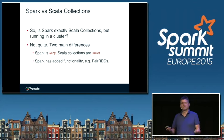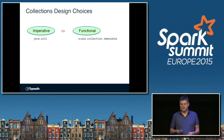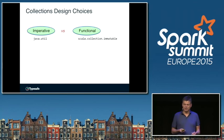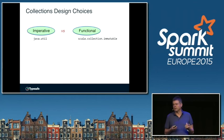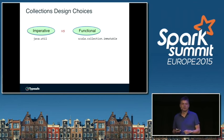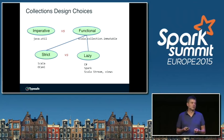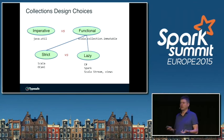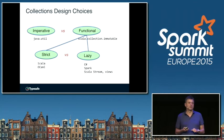If I take a step back and ask what kinds of collection libraries are out there, the first distinction is between imperative collections — like those from Java util — and functional collections. Imperative is much more common. Once you go functional, there's another distinction: whether you're lazy or strict. Strict functional collections are the default in Scala, or in OCaml. Lazy collections you find interestingly in C# — LINQ is fundamentally lazy — and also in Spark, along with some specific Scala collections.